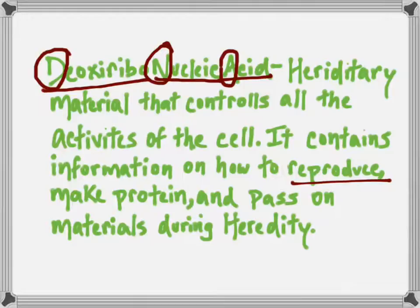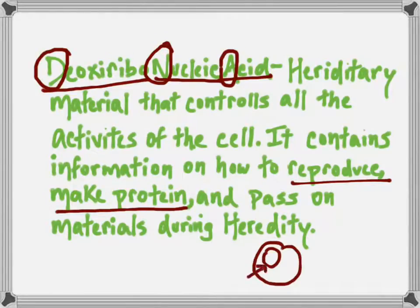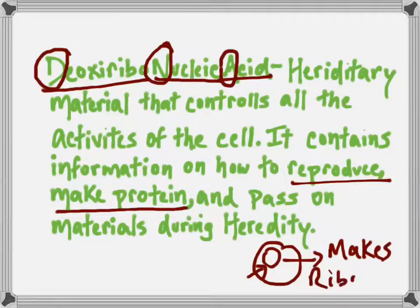DNA also makes protein. In most eukaryotic cells, the DNA is contained by the nucleus. And in the nucleus is the nucleolus — that tiny little circle right here — and that's what makes ribosomes. We know that ribosomes make protein. So it's actually the DNA that helps the nucleus make the ribosomes, which in turn makes protein. It's kind of interesting how it's the DNA that started all of that.